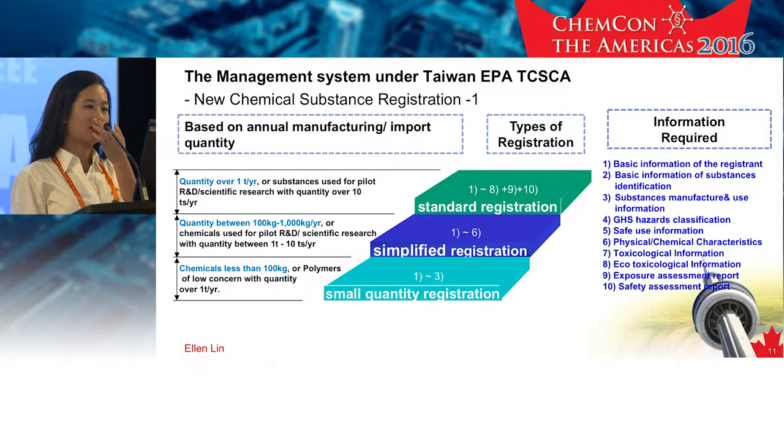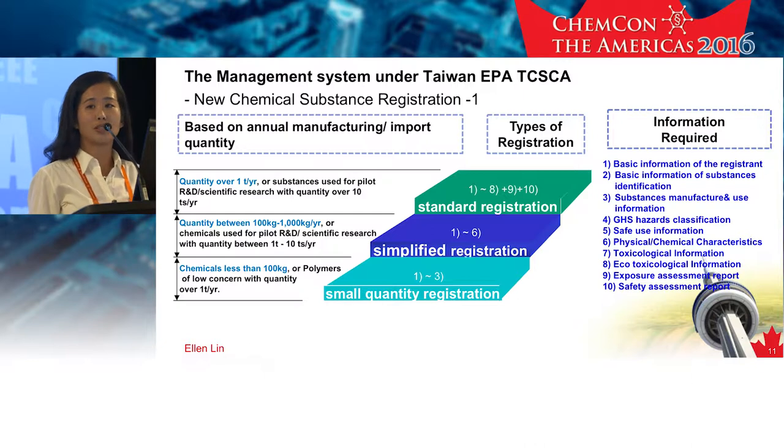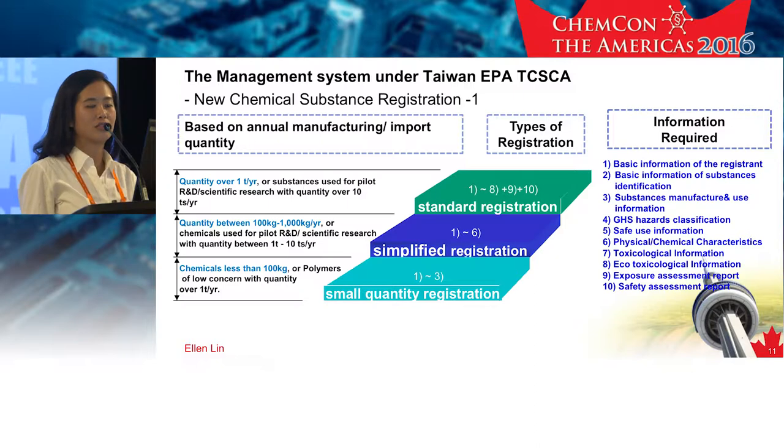The information required differs from registration type to type. Generally, for small-quantity registration, only basic information of the substance and the registrants is needed. But for standard registration, the information required is more extensive, including exposure and safety risk assessment reports.